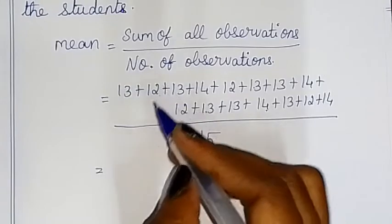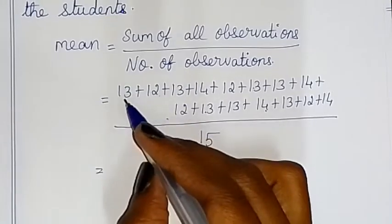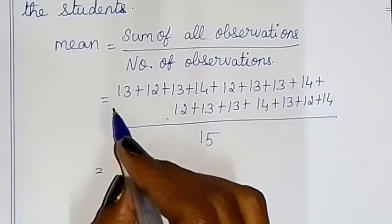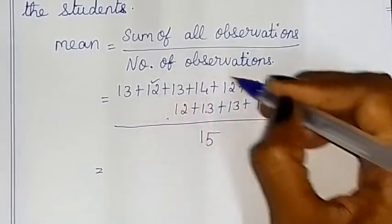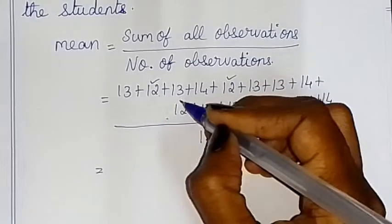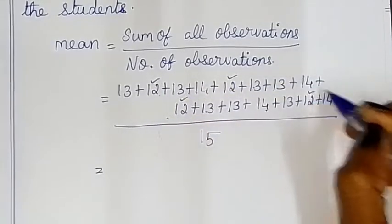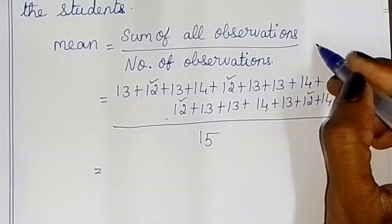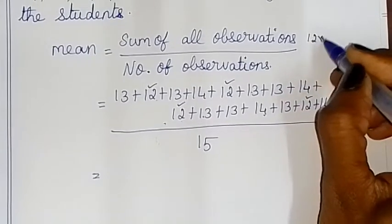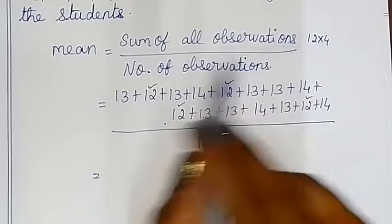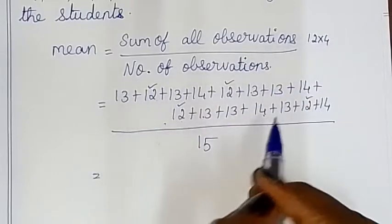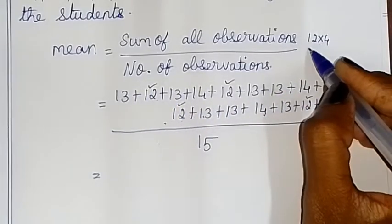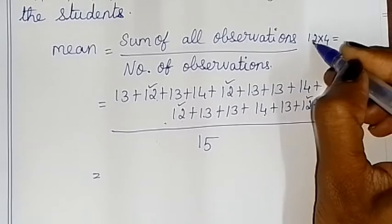Now we will use a short trick. Here all the numbers are 12, 13, and 14. So we check how many times each number appears. The number 12 appears 1, 2, 3, 4 times — so 12 appears 4 times.